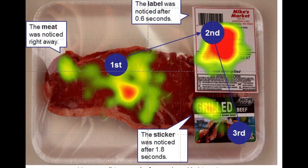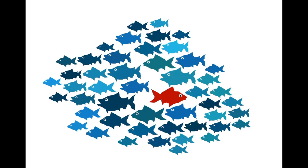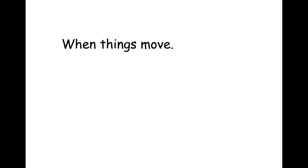Which one of these is not like the other? There are lots of ways: some fish face the opposite direction, some are bigger or smaller, different colors, different sizes, different shapes. How you represent differences can be an important visual cue for describing a scene.